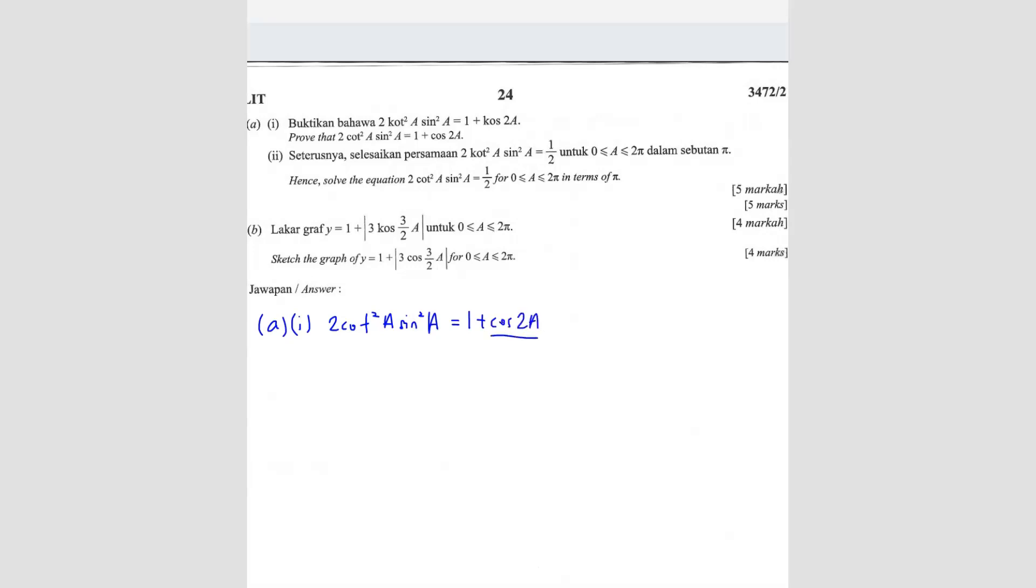So cos 2A, we have the formula. So cos 2A equals, there are three possibilities. Either you can make it become cos square A minus sine square A, or you can make it become 1 minus 2 sine square A, or you can also make it become 2 cos square A minus 1.